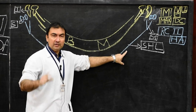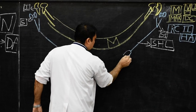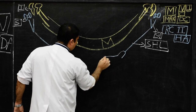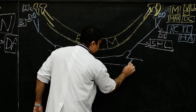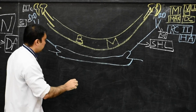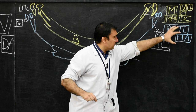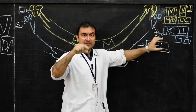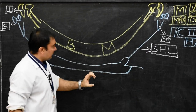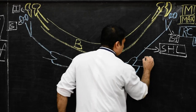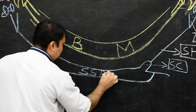The stylohyoid ligament connects to the lesser cornu of the hyoid bone. The lesser cornu continues as the superior surface of the body of the hyoid bone. So the ventral derivatives of the second pharyngeal arch are the lesser cornu of the hyoid bone and the superior surface of the body of the hyoid bone.